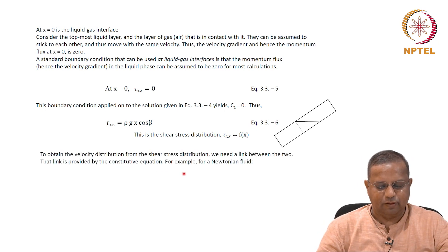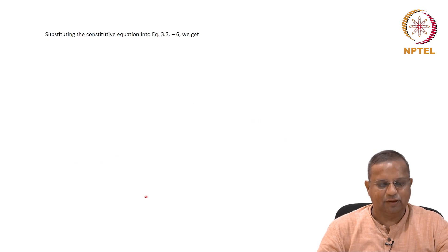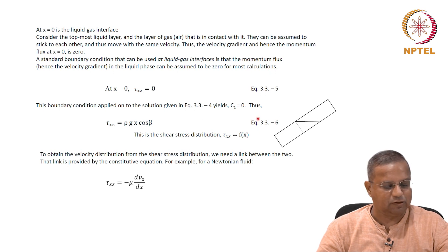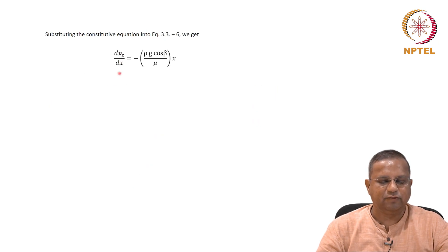For a Newtonian fluid, we know that tau xz equals minus mu dvz dx, the directions relevant to the subscripts here are x and z. If we substitute this constitutive equation into equation 3.3-6, which is the expression for the shear rate, we get dvz dx equals minus rho g cos beta by mu times x. Now we integrate this and directly get vz. Let us call this equation 3.3-7. We get vz equals minus rho g cos beta by 2 mu times x squared by 2 plus the constant of integration.